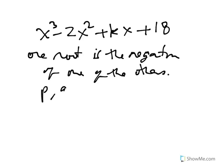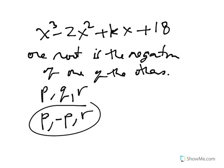So this means instead of having p, q, and r as the three roots, my roots are p, minus p, and r. Now we have a couple of numbers to work with: the 18 and the minus 2. The minus 2 is related to the sum of the roots, and the 18 is related to the product of the roots.